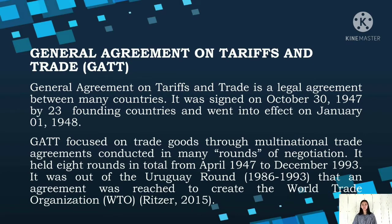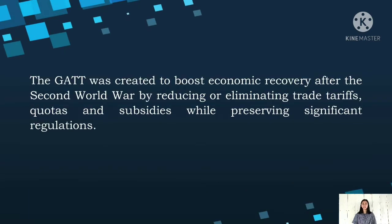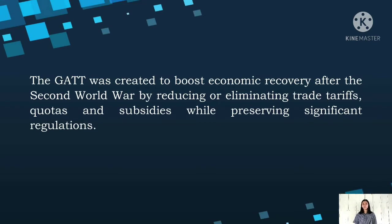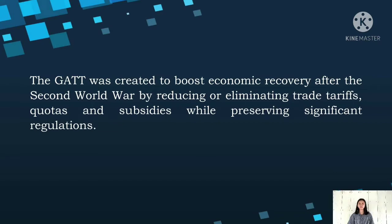It was out of the Uruguay Round, concluded in 1986 to 1993, that an agreement was reached to create the World Trade Organization or WTO. GATT was created to boost economic recovery after the Second World War by reducing or eliminating trade tariffs, quotas, and subsidies while preserving significant regulations. To be clear, GATT was not a formal organization — it had no headquarters, no permanent staff, or any other characteristics normally associated with an international organization. Rather, it is an umbrella agreement to govern international trade talks.